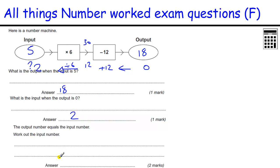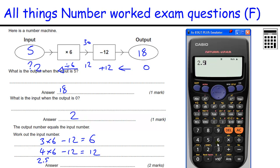The output number equals the input number. Work out the input number. So we know 5 gives us 18 and 2 gives us 0. So somewhere in between 2 and 5. So if we try 3 times 6 is 18, minus 12 is 6. 4 times 6 is 24, minus 12 is 12. That's too big. So let's go for 2.5. 2.5 times 6 minus 12 equals 3. So that's still too big. So 2.4 times 6 minus 12 equals 2.4. So 2.4 is your answer.